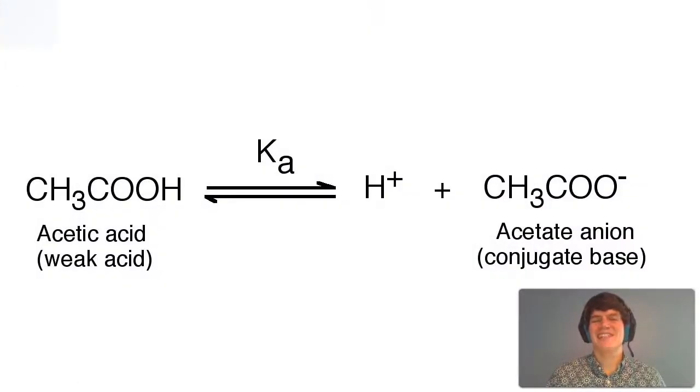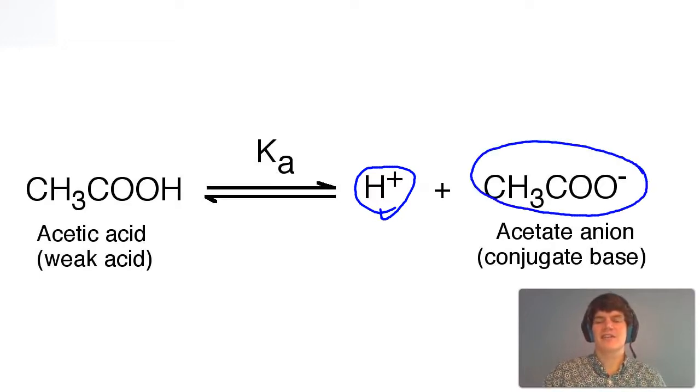Because acetic acid is a weak acid, it is not going to completely dissociate into a proton and acetate anion. However, when sodium acetate is added to a solution, it dissociates completely, so 100% of the acetate in sodium acetate is going to enter the solution. That's going to cause acetate anion concentration to increase dramatically.